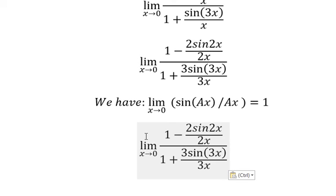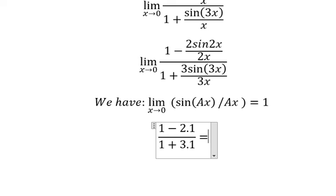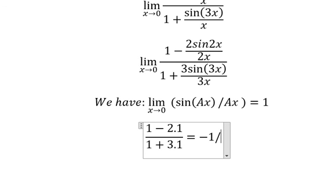So we simplify this one and we get 1 minus 2 multiplied with 1, over 1 plus 3 multiplied with 1. And we get negative 1 over 4. This is the end, thank you.